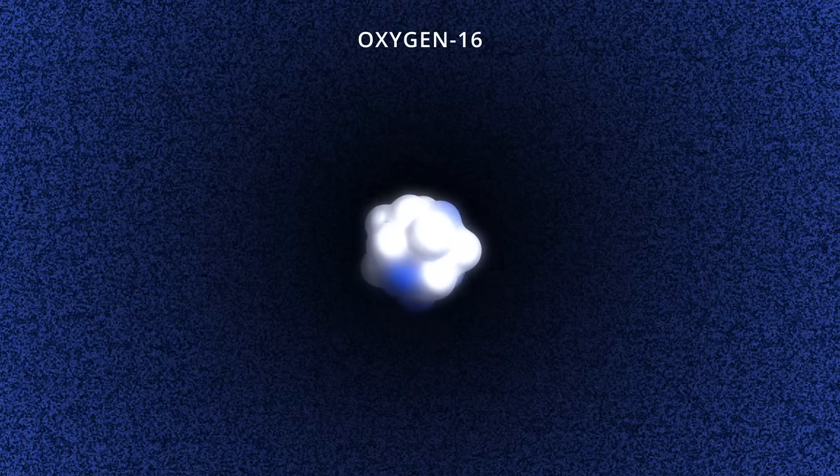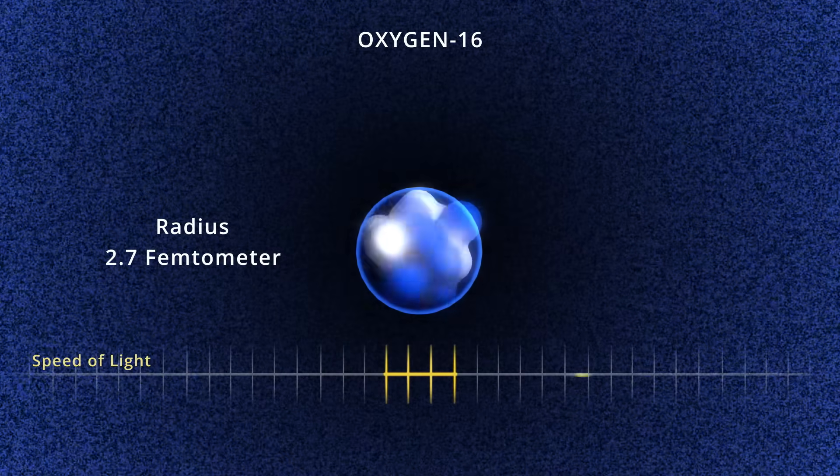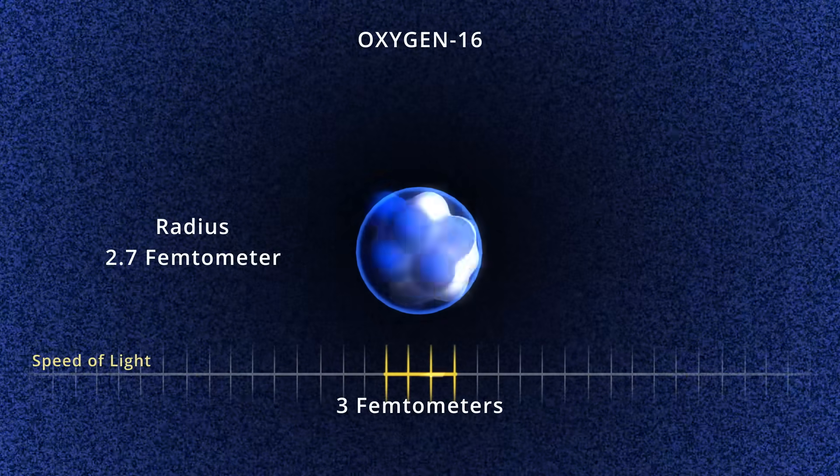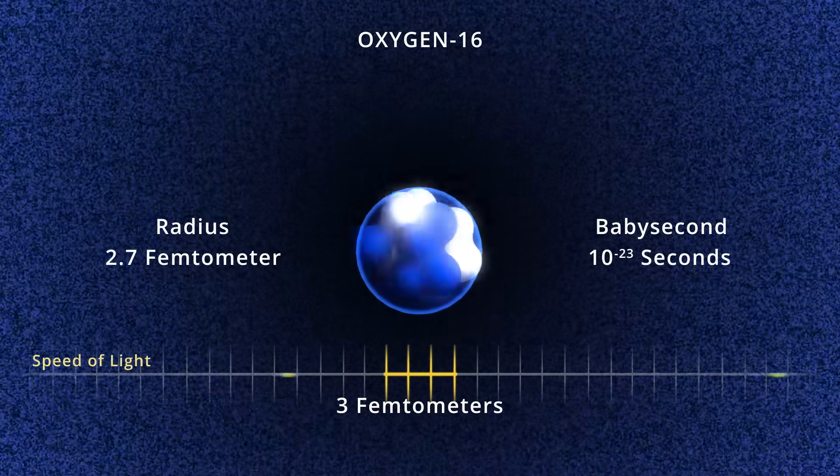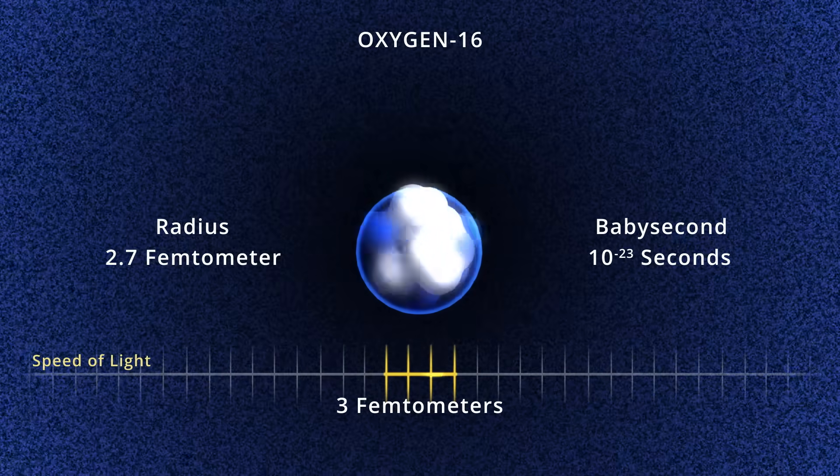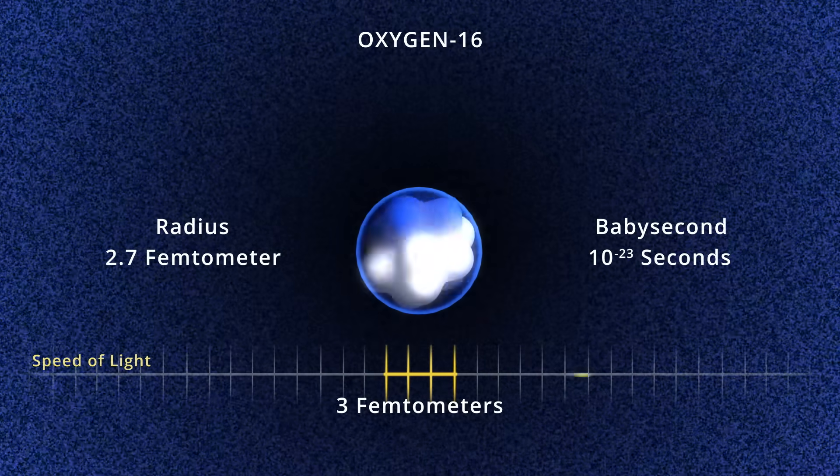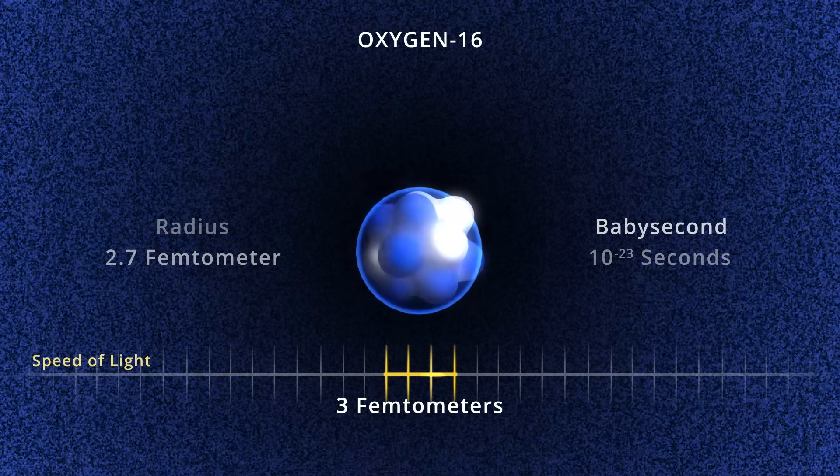Oxygen-16 has a charge radius of 2.7 femtometers. To better define the velocities of particles at such small distance scales, we establish the baby second as 10 to the negative 23rd seconds. A photon moving at the speed of light crosses 3 femtometers, a bit more than the radius of oxygen-16, in one baby second.